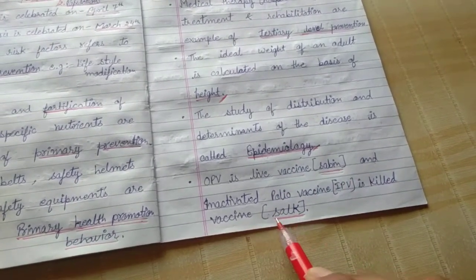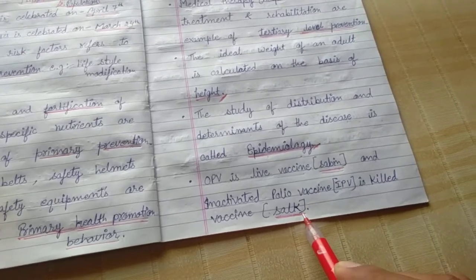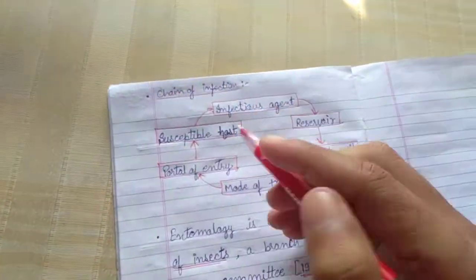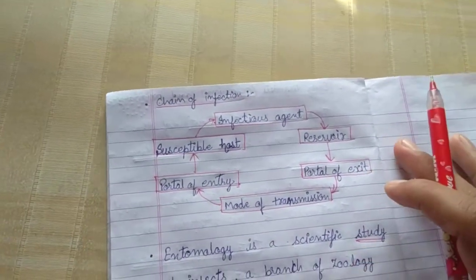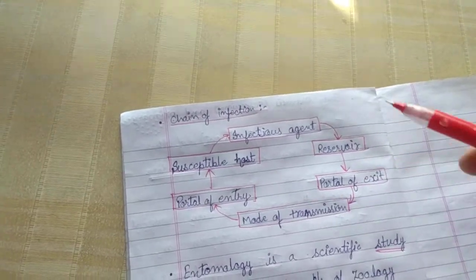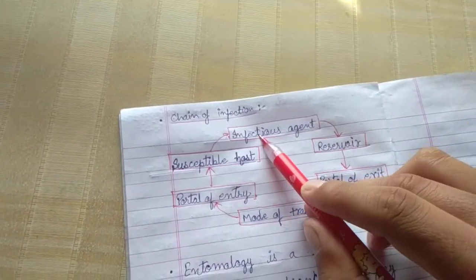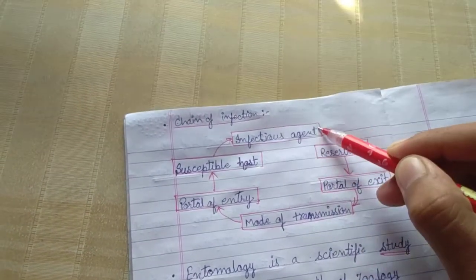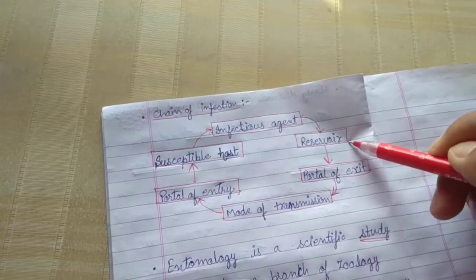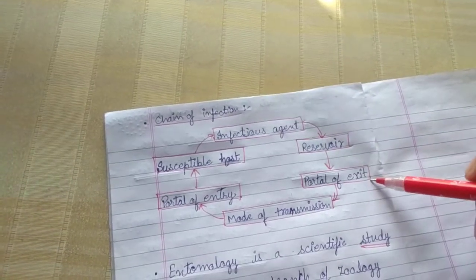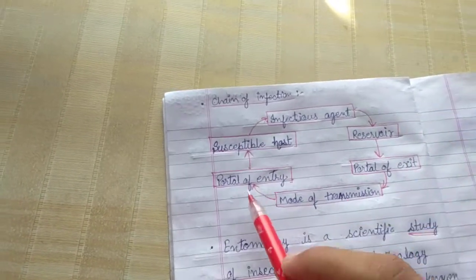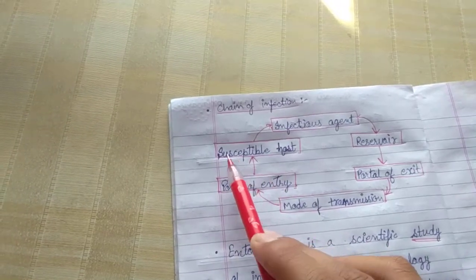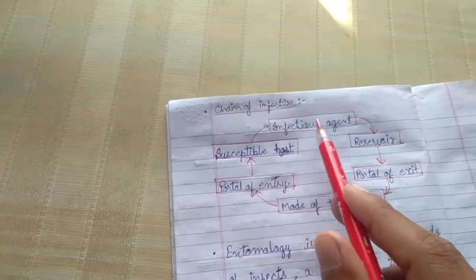In the chain of infection, there are steps that go in a chain. Starting from the infectious agent, then the reservoir, then the portal of exit, then the mode of transmission, then the portal of entry, and finally the susceptible host. This is the chain of infection.